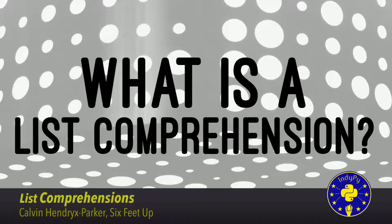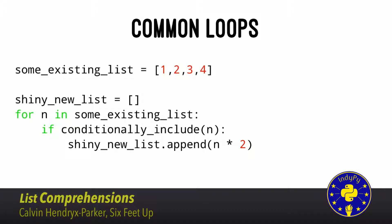How do you normally take one list and turn it into another list in your language? For loops, right? So you normally would be using for loops. This is the common pattern for taking a list of things, like some existing list, and turning it into a shiny new list. A lot of times you may have some kind of conditional because you're trying to filter out things from the list, or somehow modify that list as you're appending to it, and then perform some operation on each item.